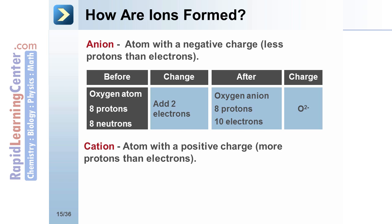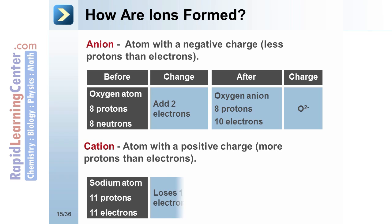A cation is formed when electrons are removed. Cations are positively charged. For example, a sodium atom has eleven protons and eleven electrons.